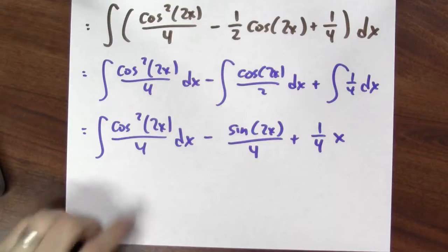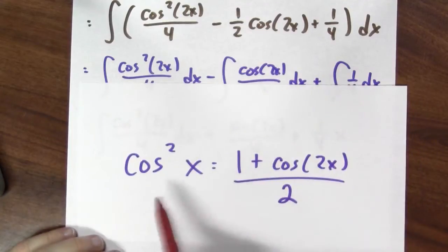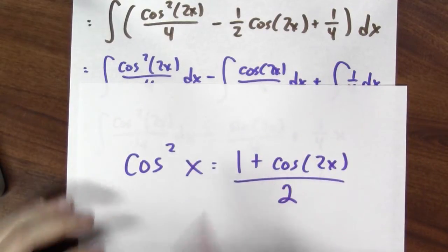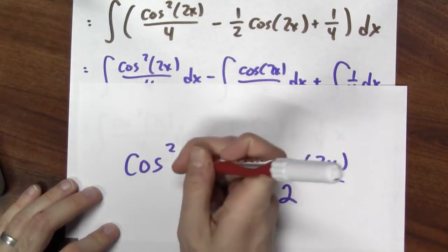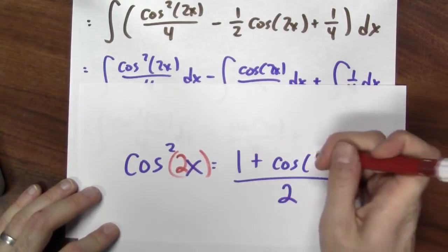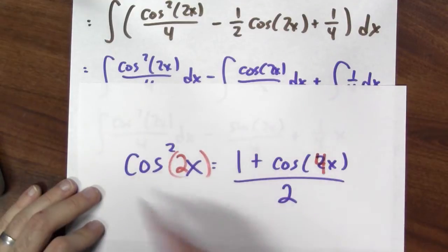What about that first one? How do I integrate cosine squared? So to handle this, I can repeat the trick with the half angle identity. But I'm looking at integrating cosine squared 2x. So I'll replace x by 2x, and that'll turn this into a 4x. So I can use this identity.